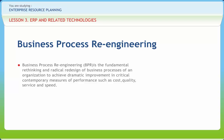By definition, re-engineering is radical change fast. Re-engineering involves fundamental rethinking and transformation of an integrated set of business processes. It demonstrates breakthrough thinking and aims at dramatic business results. Unlike quick hits and incremental improvement, re-engineering is a form of organizational change characterized by dramatic process transformation.